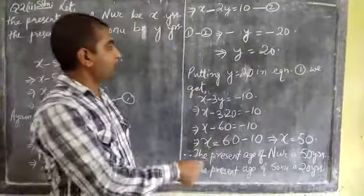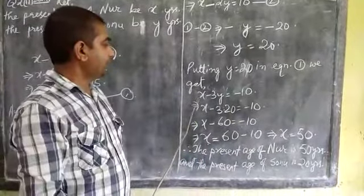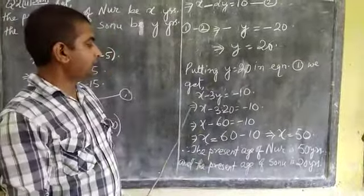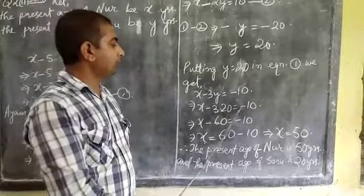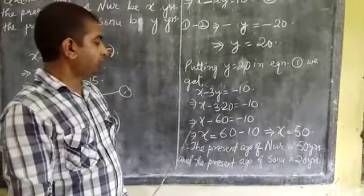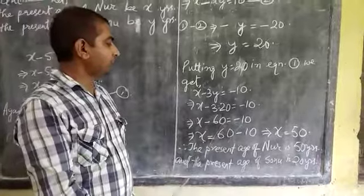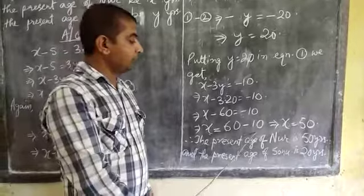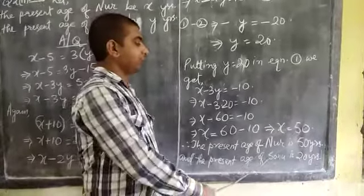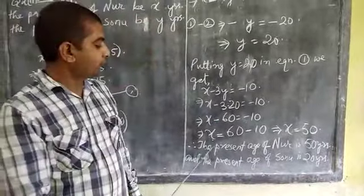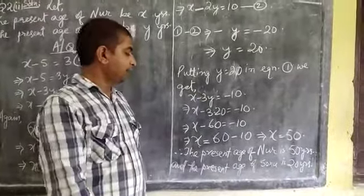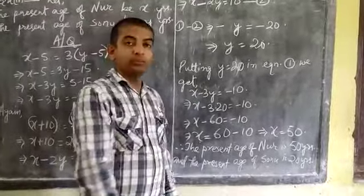Putting y is equal to 20 in equation 1, we get x minus 3 into 20 is equal to minus 10, implies x minus 60 is equal to minus 10, implies x is equal to 60 minus 10, implies x is equal to 50. Therefore, the present age of Nour is 50 years and the present age of Sonu is 20 years. Thank you.